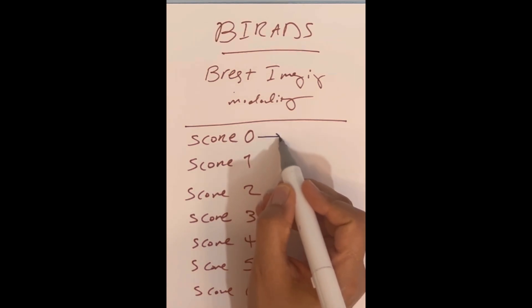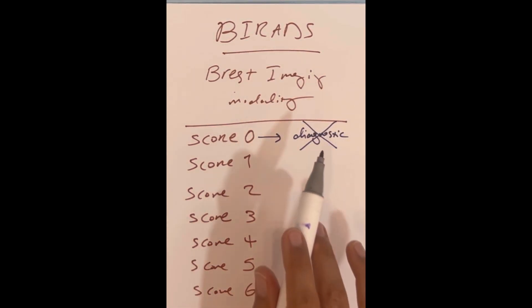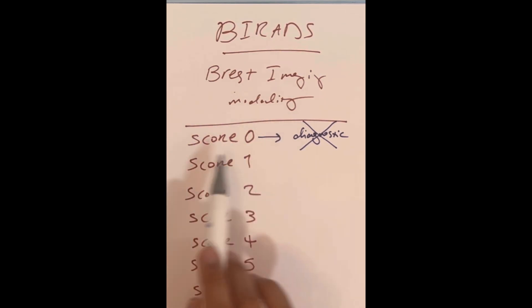Score 0 means that this modality is not diagnostic. You shouldn't decide based on data from this modality and should use another modality. For example, if you have a Score 0 or BI-RADS 0 in ultrasound of the breast, you should use mammography or MRI of the breast instead.